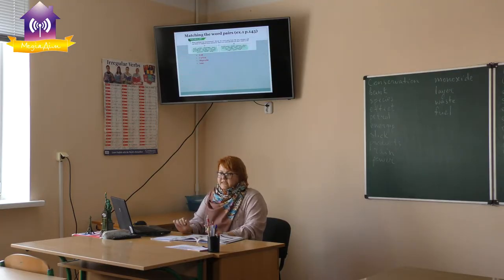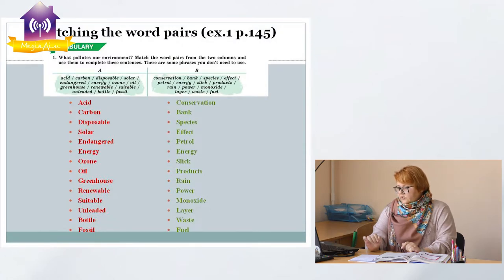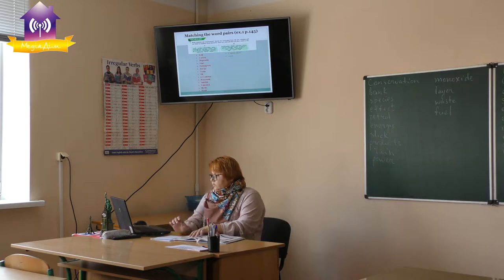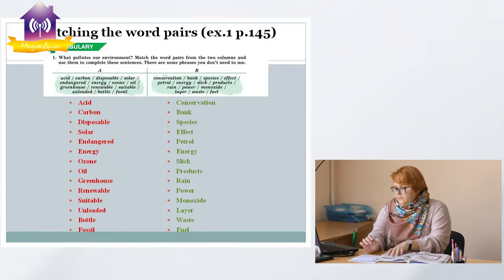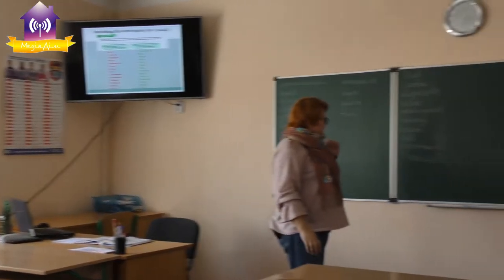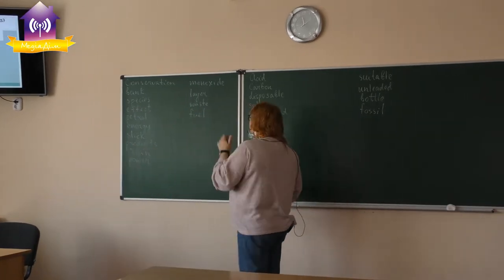So we have this list of words: acid, carbon, disposal, solar, endangered, energy, ozone, oil, greenhouse, renewable, suitable, unleaded, bottle, and fossil. As you can see in our textbook there is a second column B with another list of words: conservation, bank, species, effect, petrol, energy, slick, products, rain, power, monoxide, layer, waste, and fuel. We have to match them to make some word expressions, some word pairs. Let's try to do that on the board.